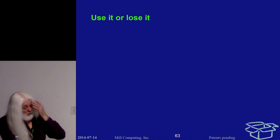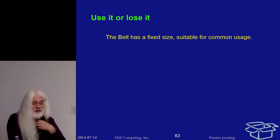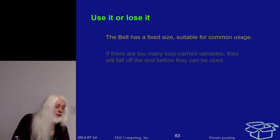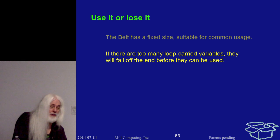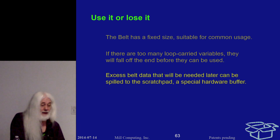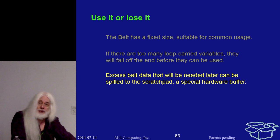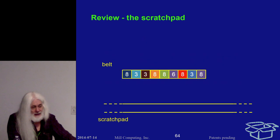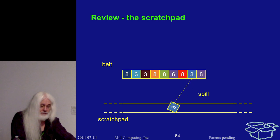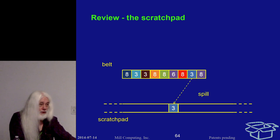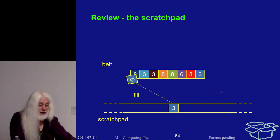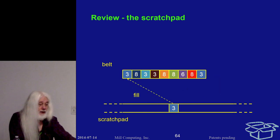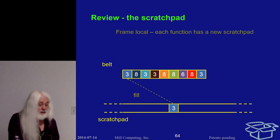That only works if there's enough room on the belt. The belt has a fixed size suitable for common usage. If there are too many loop-carry variables, something will fall off the end before you can use it. The excess belt data can be spilled to what's called the scratch pad — a special hardware buffer. A spill operation takes any value off the belt and stores it in the scratch pad; the corresponding fill operation retrieves it and puts it back on the belt.